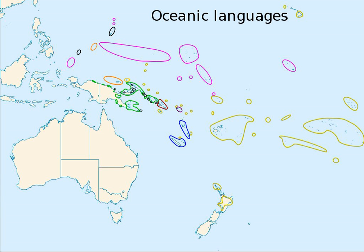The aboriginal Australian languages, including the large Pama-Nyungan family. The Papuan languages of New Guinea and neighbouring islands, including the large Trans-New Guinea family. Contact between Austronesian and Papuan resulted in several instances in mixed languages such as Mazan.